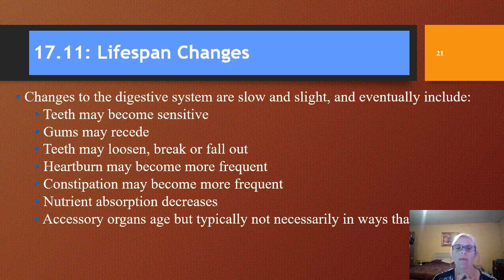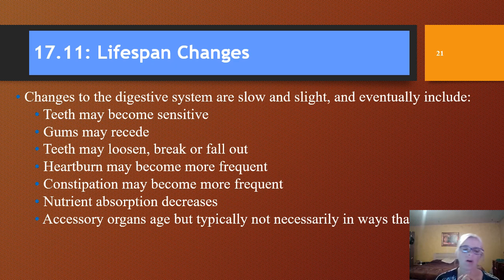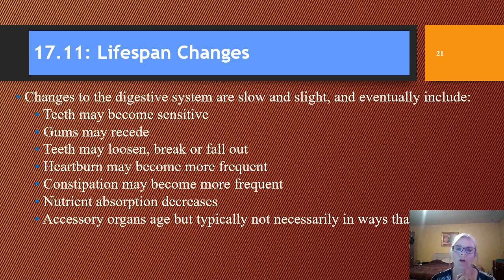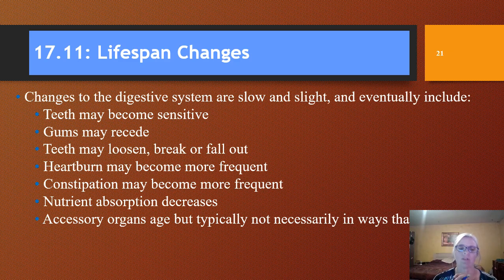As we get older, the digestive system changes. Your teeth can become sensitive, gums may recede, and we often lose teeth. You can have more heartburn and more constipation. Nutrient absorption decreases — for example, we talked about not being able to absorb B12 as you get older. Your accessory organs age, and in general the whole system slows down and doesn't work quite as well as it used to.